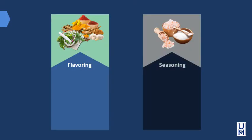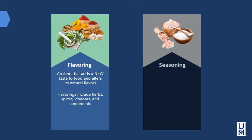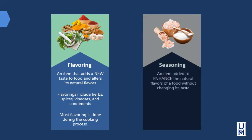Let's talk about the difference between flavorings and seasonings. Flavorings are items that add a new taste to food and alter its natural flavor — these include herbs, spices, vinegars, and condiments, and most flavoring is done during the cooking process. Seasoning is an item added to enhance the natural flavor of a food without changing its taste. Salt is the most common seasoning, and most seasoning is done at the end of the cooking process.